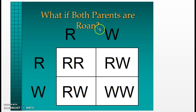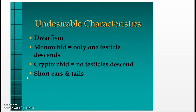What if both parents are roan? With RW across the top and RW across the side, you'll have 25% red, 25% white, and 50% roan offspring.